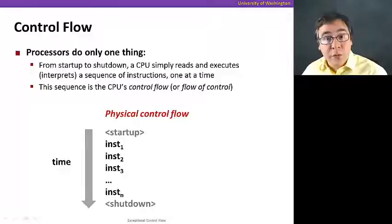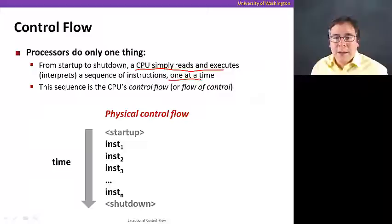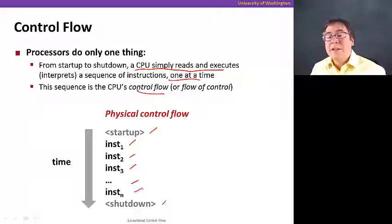Before we see processes in virtual memory, let's talk a little bit more about control flow. There'll be some special things about control flow that are going to be useful to implement process abstractions in virtual memory. Processors do one thing: they execute one instruction after the other from start up to shut down. The CPU simply reads and executes a sequence of instructions one at a time. This is what we call control flow.